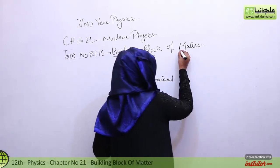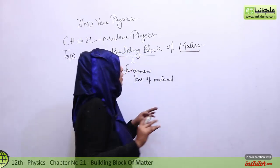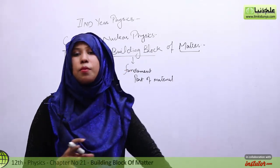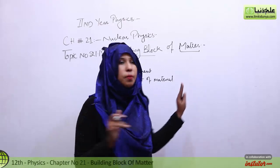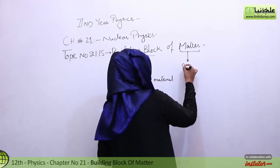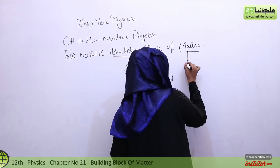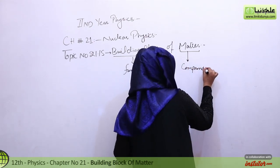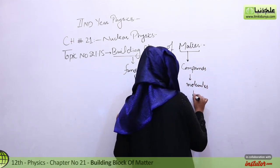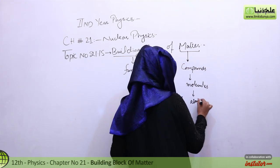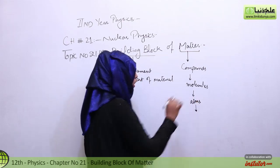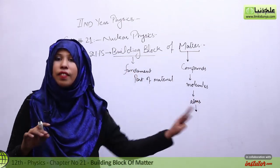Now let's take a look at matter. We have explained the definition of matter — that many atoms are combined into matter. If we want to see matter, first of all it will be compounds. Compounds are made by many molecules, and molecules are made by atoms. Now, if you can see this atom, is it a subatomic particle or a fundamental particle?